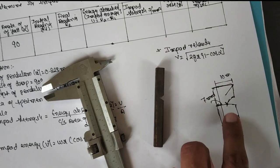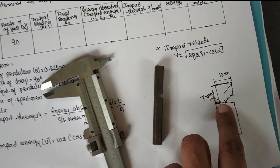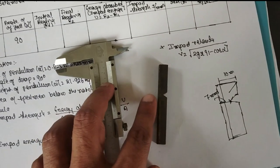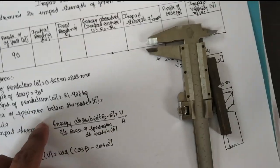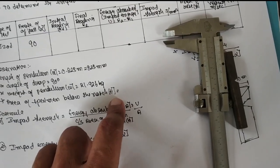And area below the notch, you have to consider. You have to measure this part, the area below the notch. That means 10 into 7, you will get 70 mm.